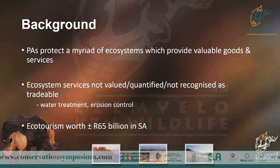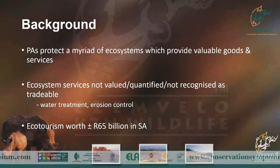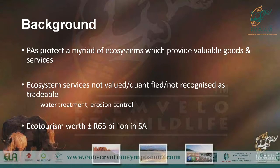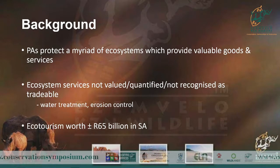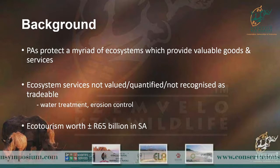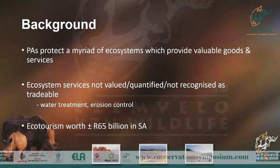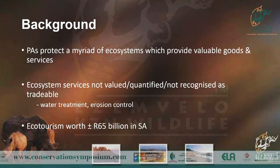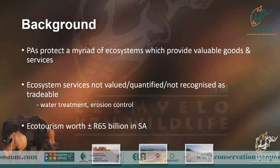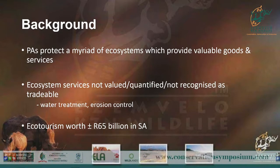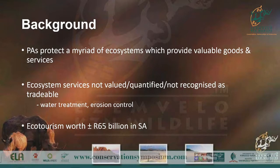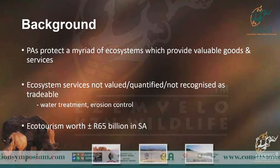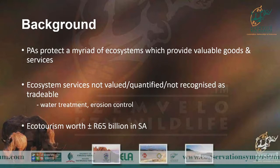It's these ecosystem services that have now become our selling points — to say we're not just conserving for biodiversity and future generations, but we are conserving because there are ecosystem goods and services that are valuable, that we need to sustain livelihoods and that contribute to the economy.